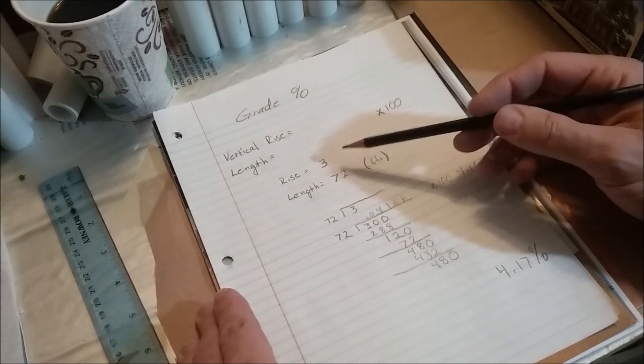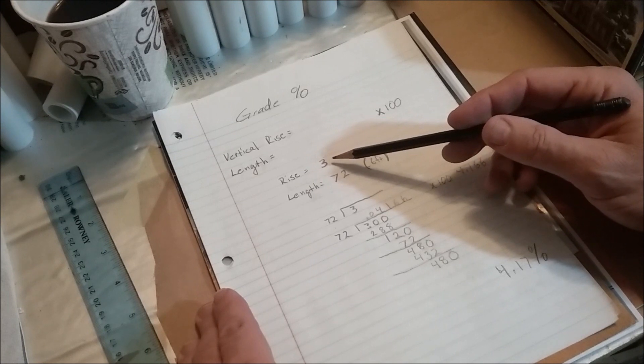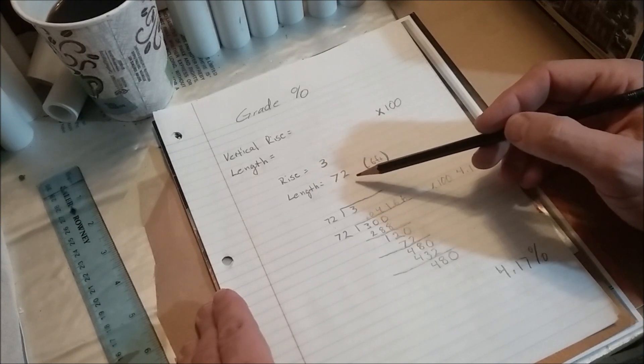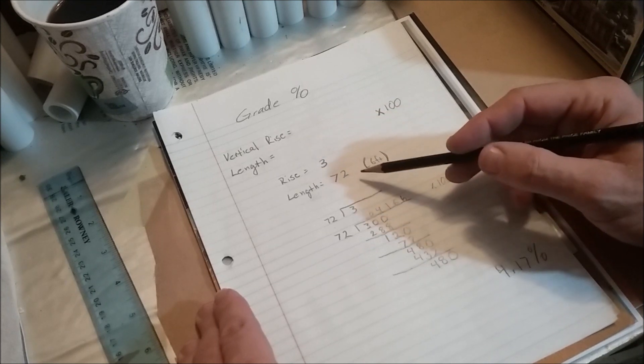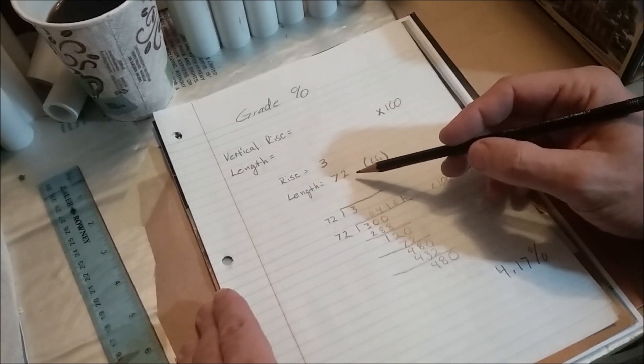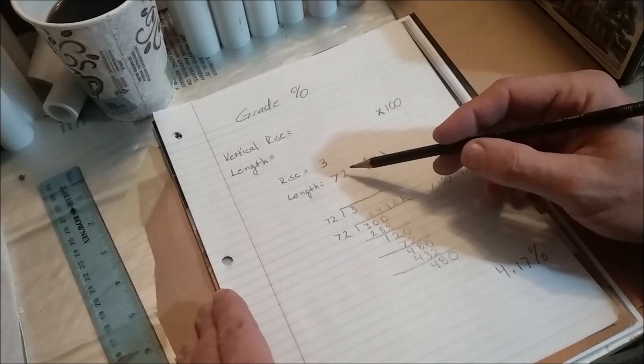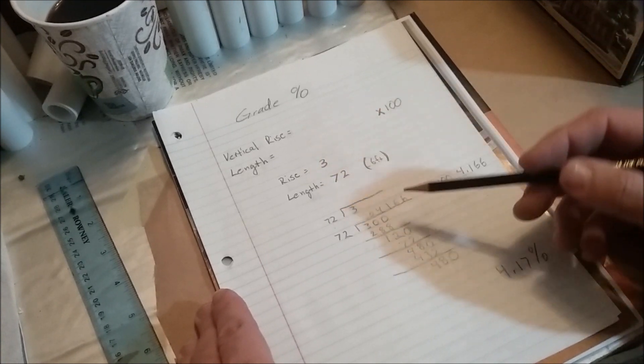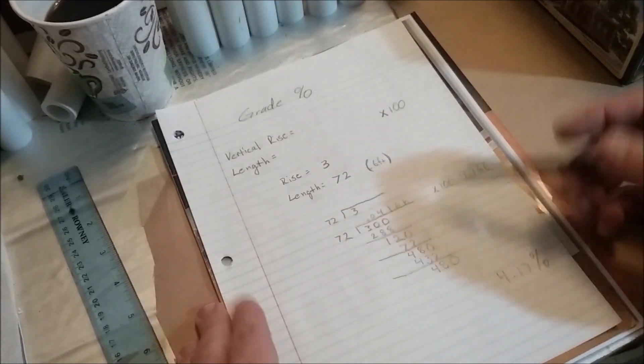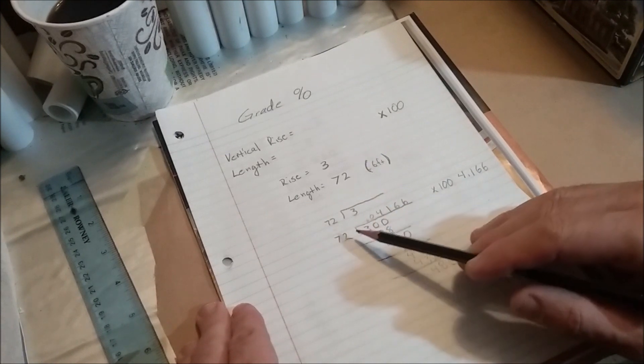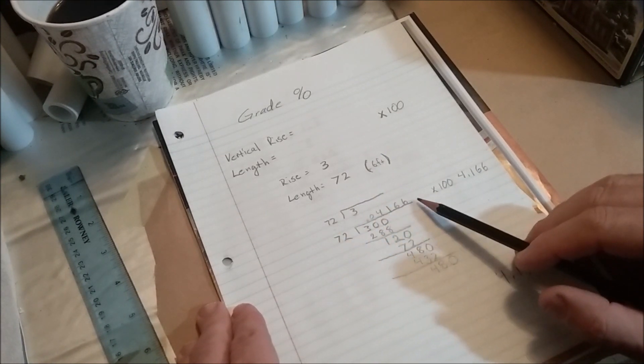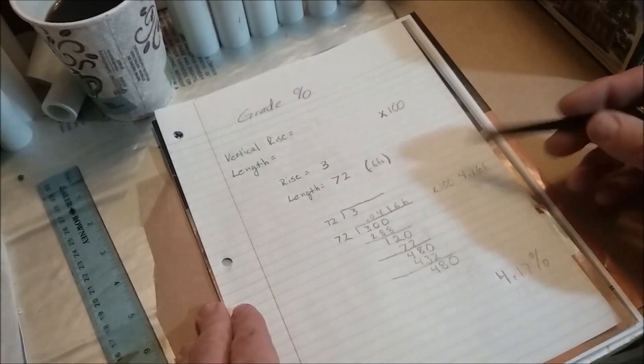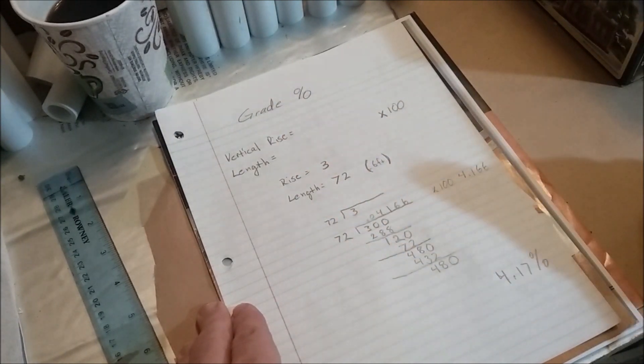All you have to do is divide the 3 inches of the rise by the length that you're going to use. I'm going to put 6 feet, because that's kind of standard, probably on a 4 by 8 table, which would be 72 inches. And all you have to do is divide that, then multiply it by 100. What you come up with is 0.041666, and of course the 6s go on forever.